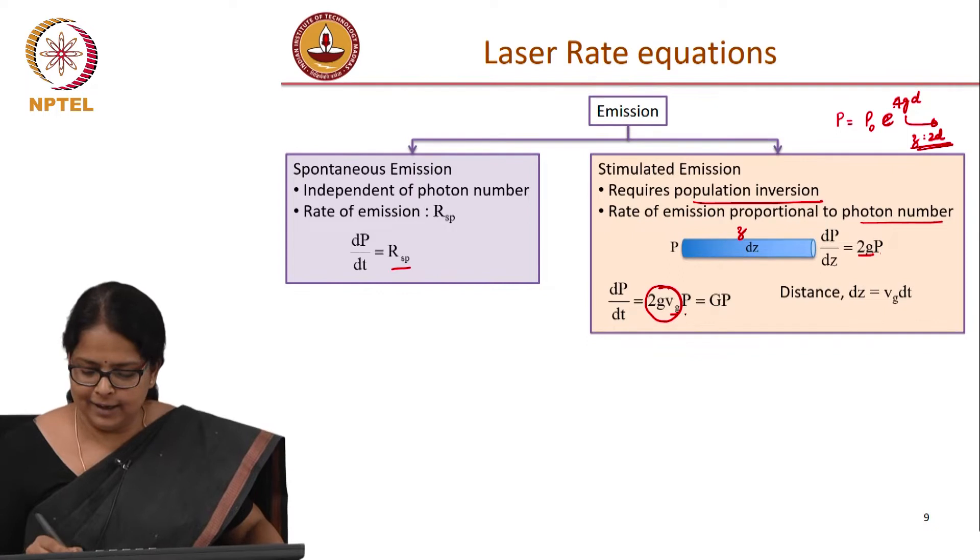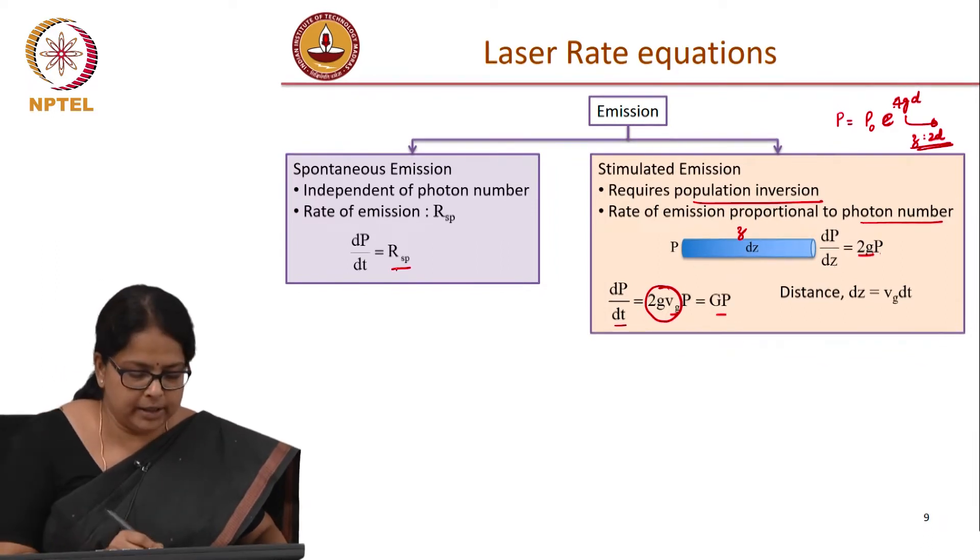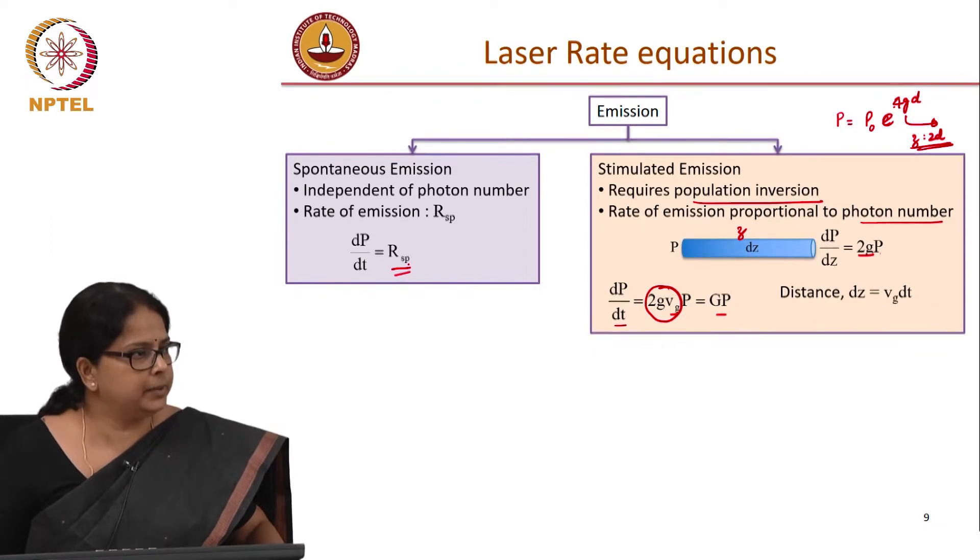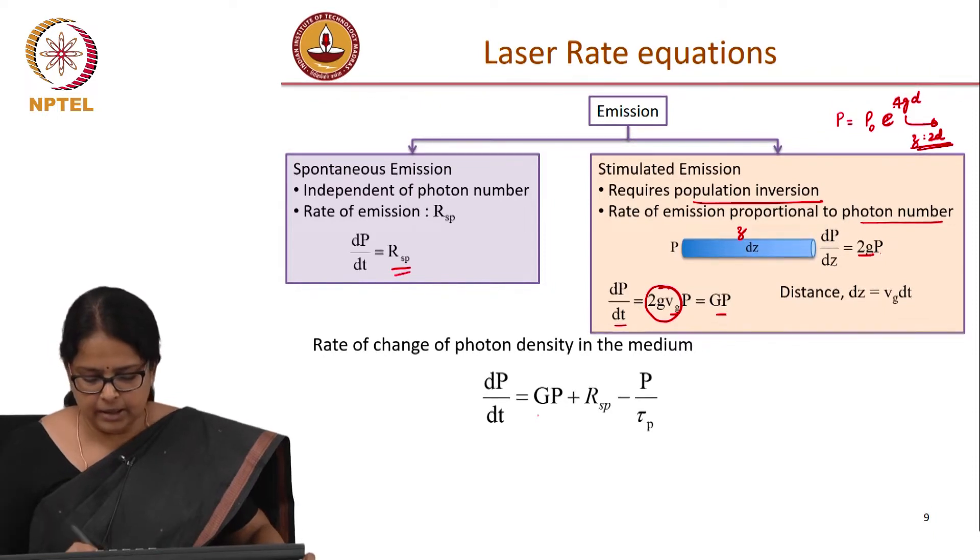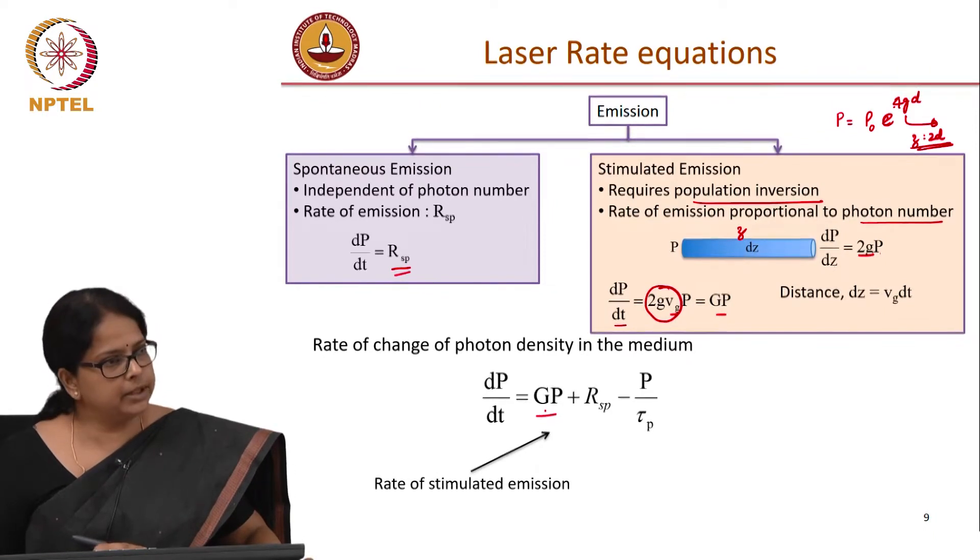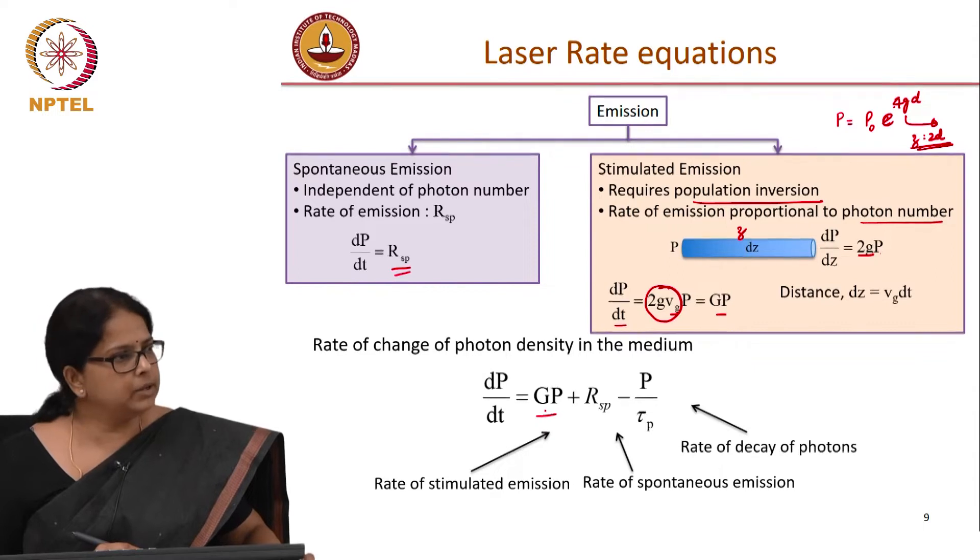So the rate at which the stimulated emission is happening, now I got GP. Rate at which spontaneous emission is happening, I got RSP. Rate at which the photons are decaying, I have already derived minus P by tau P. So what is the total rate equation? My rate of change of photon density in the gain medium is GP because of stimulated emission, RSP because of spontaneous emission and P by tau P because of decay of photons.